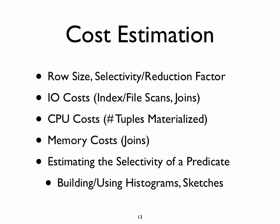Cost estimation: we talked about various ways of computing the reduction factor of different queries, given the reduction factor of individual operations. Given row sizes, selectivity, and reduction factor, how one might compute I/O costs and CPU costs of a given expression. We briefly touched on memory costs as well. And finally, we talked about estimating selectivity of a predicate given histograms, and also a couple of sketches towards the end of the term applicable to this purpose.